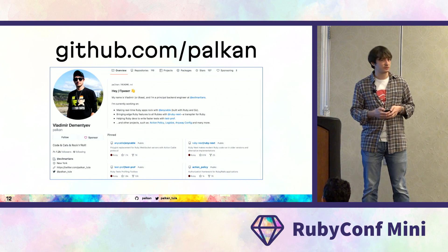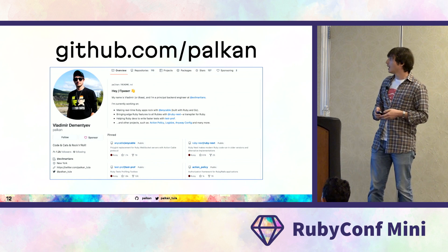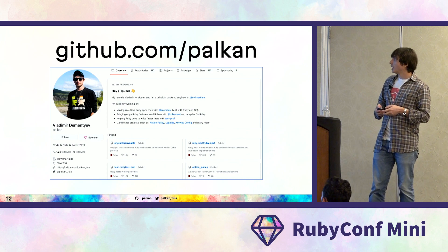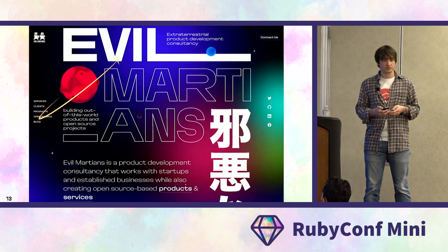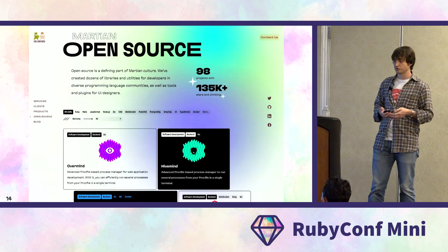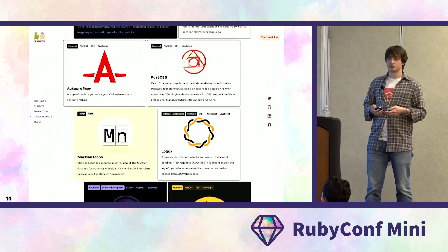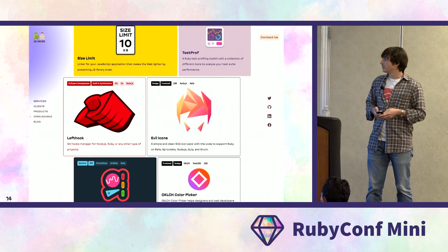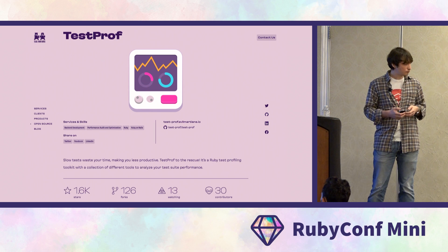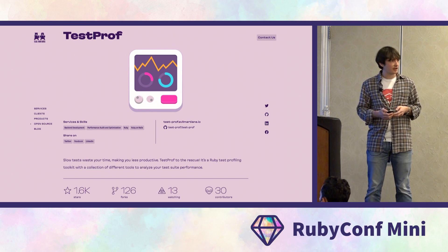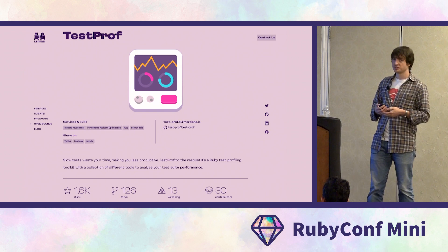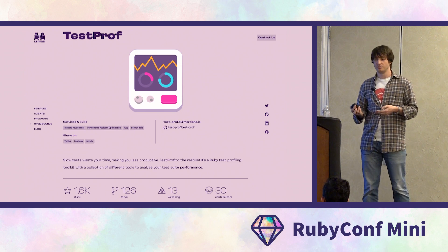A bit of introduction. My name is Vladimir. You might have seen me on GitHub — I maintain some projects, a few dozens probably. I work for a company called Evil Martians, a product development consultancy helping businesses to grow. Apart from that, we do a lot of open source. You've probably used some of our projects. One project I want to separately mention is TestProf, which I started five years ago — that's how I got attached to testing and doing Ruby test-related research.